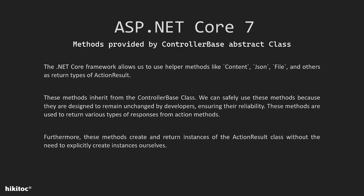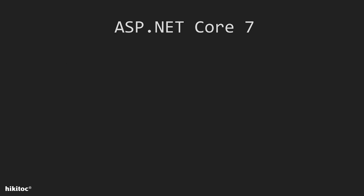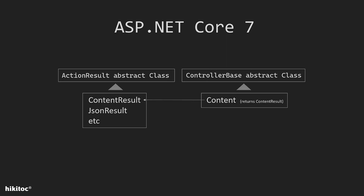In addition, since we are using the Content method, I'll briefly explain this part as well. The .NET Core framework allows us to use helper methods like Content, JSON, File, and others as return types of ActionResult. These methods inherit from the ControllerBase class. We can safely use these methods because they are designed to remain unchanged by developers, ensuring their reliability. These methods create and return instances of the ActionResult class without the need to explicitly create instances ourselves. For example, if we examine the Content method definition, we will see that it returns the ContentResult class, which inherits from the ActionResult abstract class. That's how the Content method is implemented behind the scenes — it returns ActionResult type and inherits from the ControllerBase class.